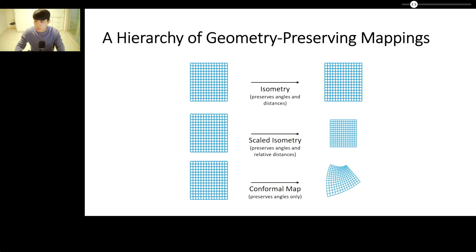For this purpose, we have formulated a hierarchy of geometry-preserving mappings. At the top of the hierarchy, an isometry preserves angles and distances, a scaled isometry preserves angles and relative distances, while a conformal map preserves angles only.